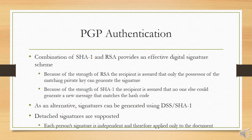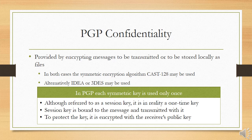A detached signature of an executable program can detect subsequent virus infection. Finally, detached signatures can be used when more than one party must sign a document, such as a legal contract. Each person's signature is independent and therefore is applied only to the document; otherwise signatures would have to be nested, with the second signer signing both the document and the first signature, and so on.